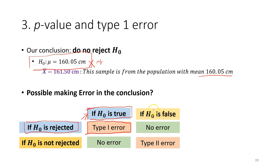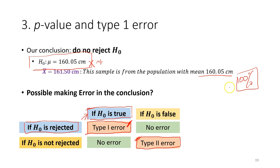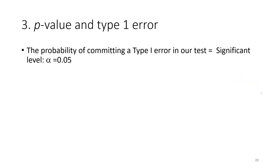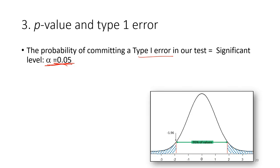On the other hand, if the null hypothesis is false but you do not reject it, you commit a Type 2 error. These errors can happen, which is why our conclusions are not 100% certain. Going back to the alpha level: the probability of committing a Type 1 error equals alpha, which is 0.05 — so there is a 5% chance of committing a Type 1 error.